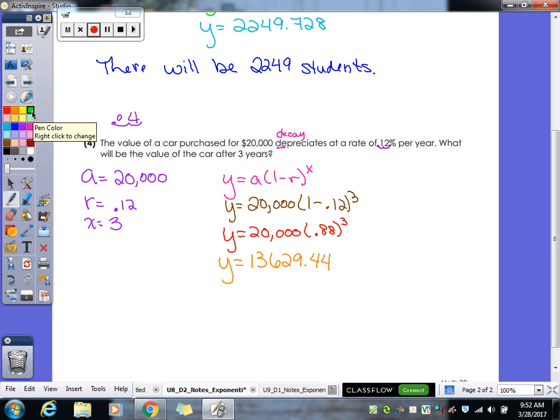This is money. Can't I have cents in money? Yeah. So we don't have to round this one. The car will be worth $13,629.44. No rounding for that one.